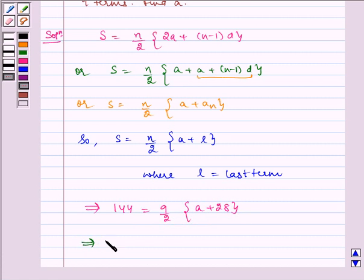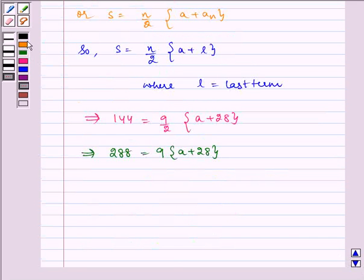Now, this implies taking 2 on this side, we get 288 is equal to 9 multiplied by A plus 28, which implies 288 is equal to 9A plus 252.